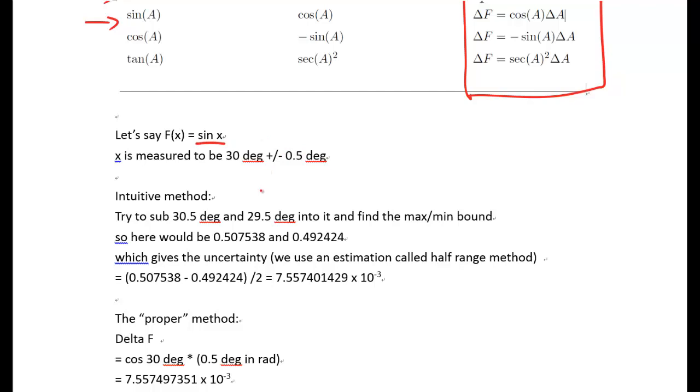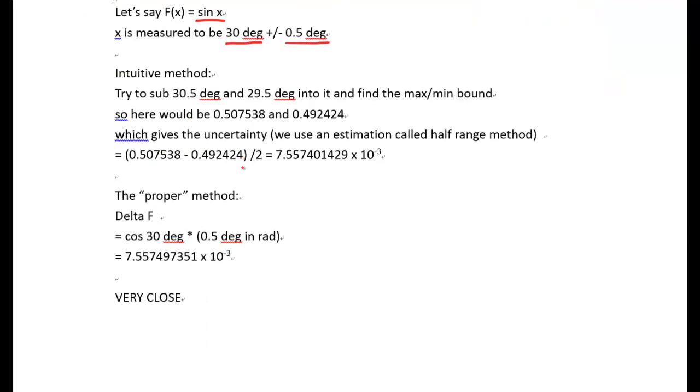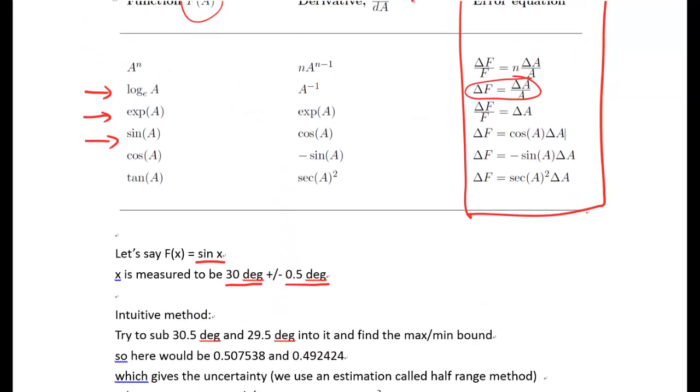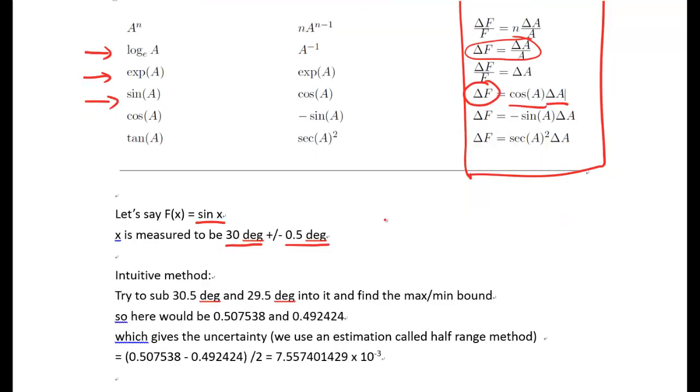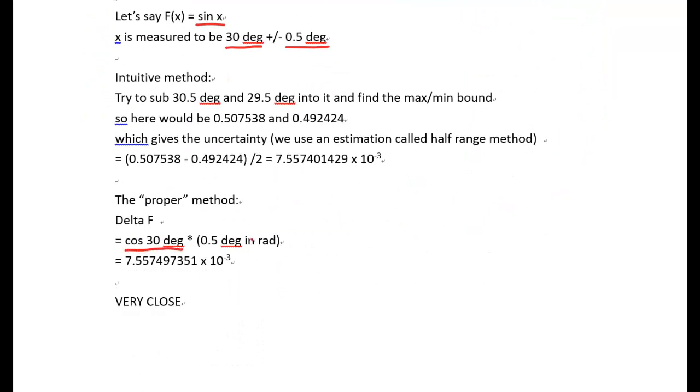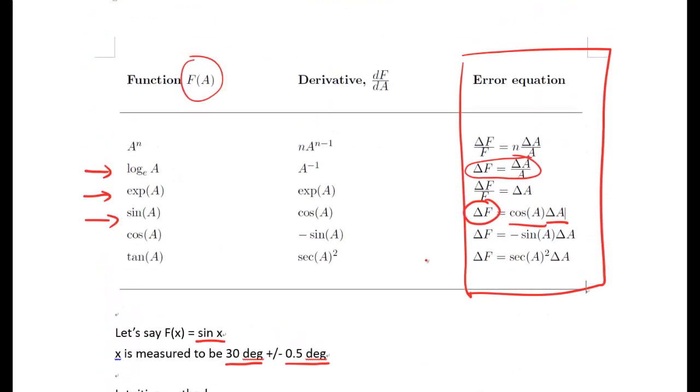Let's say if you do sine function then F will equal to sine x. And let's say you have a certain measurement that is 30 deg ± 0.5 deg. Using the proper method, delta F, that means the absolute uncertainty of the whole thing sine x, would equal to delta a times cosine a. So in that case it would be cosine 30 deg times 0.5 deg in radians, and that will be equal to 7.5 times 10 to the power of -3. This is what I call the proper method. I would say if you do it this way, as a marker I'll actually appreciate you more because you showed me how you personally engaged and tried to find a more accurate way to define the error.